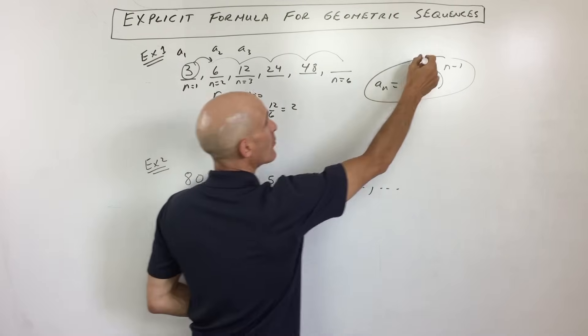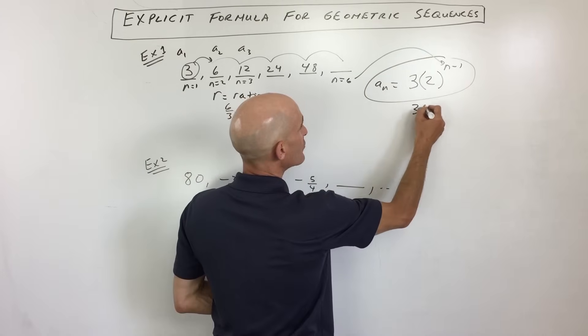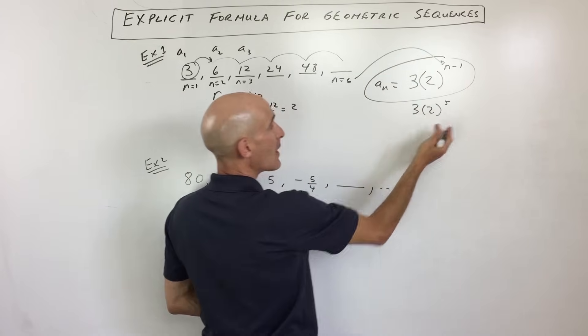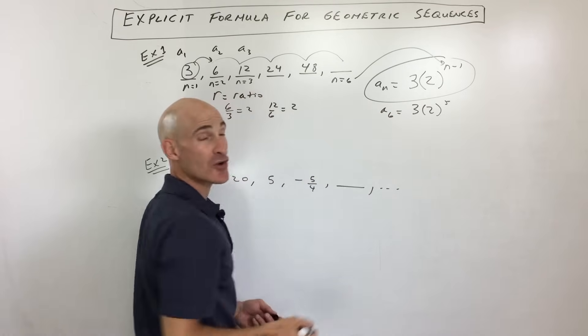Now, if we wanted to find the sixth term, what we would do is we would put 6 in place of n. So this would be 3 times 2 to the fifth, and we can simplify that, and that's going to be the value of our sixth term.